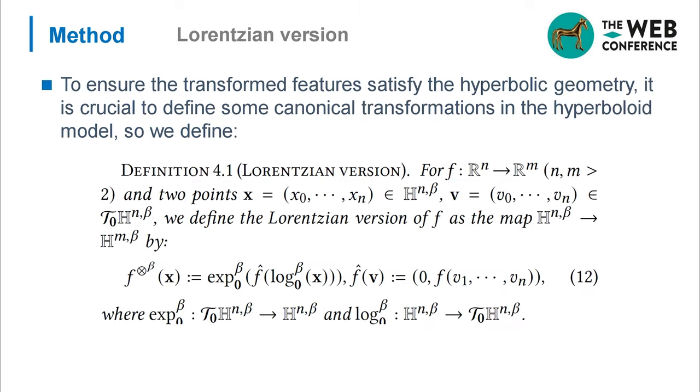To ensure the transformed features satisfy hyperbolic geometry, it is crucial to define some canonical transformations in the hyperboloid model. So we define Lorentzian version. Lorentzian version uses logarithmic and exponential maps to project features between hyperbolic space and tangent space. Different from existing methods, Lorentzian version only operates Euclidean transformations on the last n coordinates, and the first coordinate is set as 0 to satisfy the constraint in equation 4.